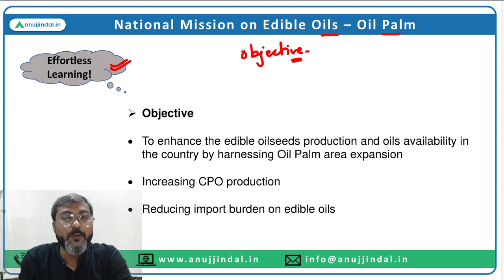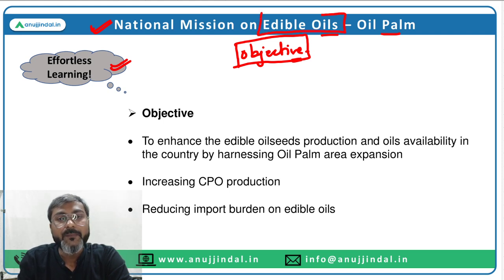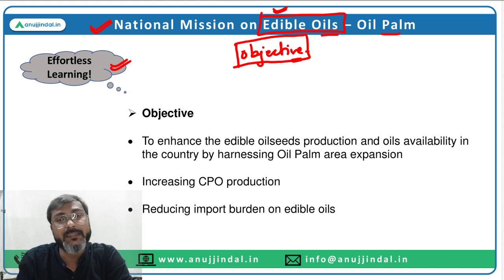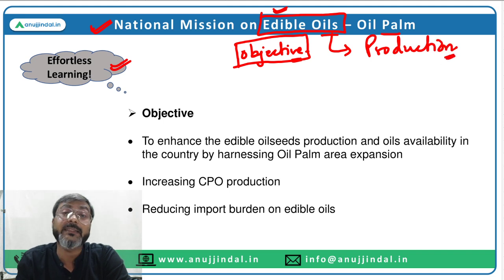What is the objective? We can easily derive the objective from the name of the scheme itself — it is National Mission on Edible Oils, which means we are talking about edible oils. If there is a national mission on edible oils, then the government wants to enhance the production of edible oil in the country — that is the basic objective.